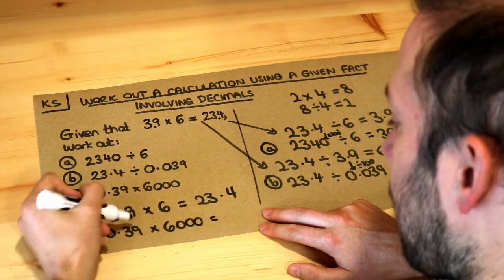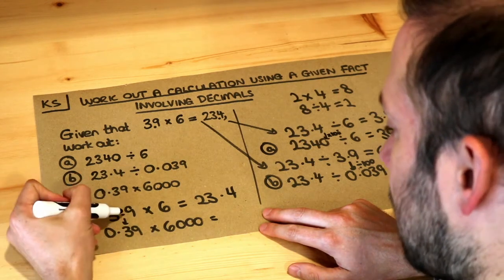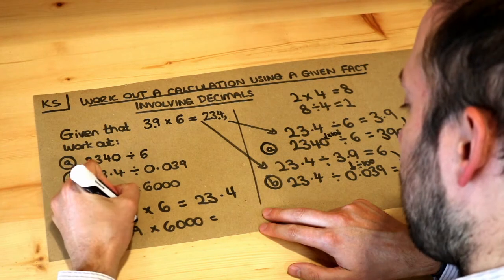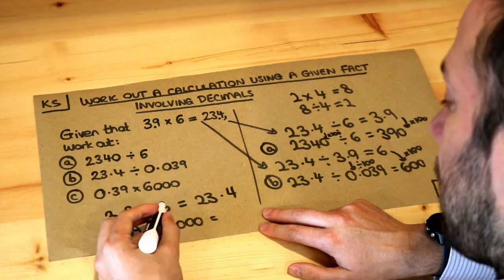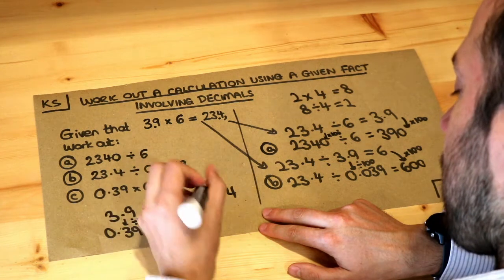Now we've got 0.39 times by 6,000. Now both the numbers are changing this time. This number here is becoming 10 times smaller. Look, the decimal point was here. It's moved one place to the left, so that's 10 times smaller. And the 6 is becoming 1,000 times bigger.